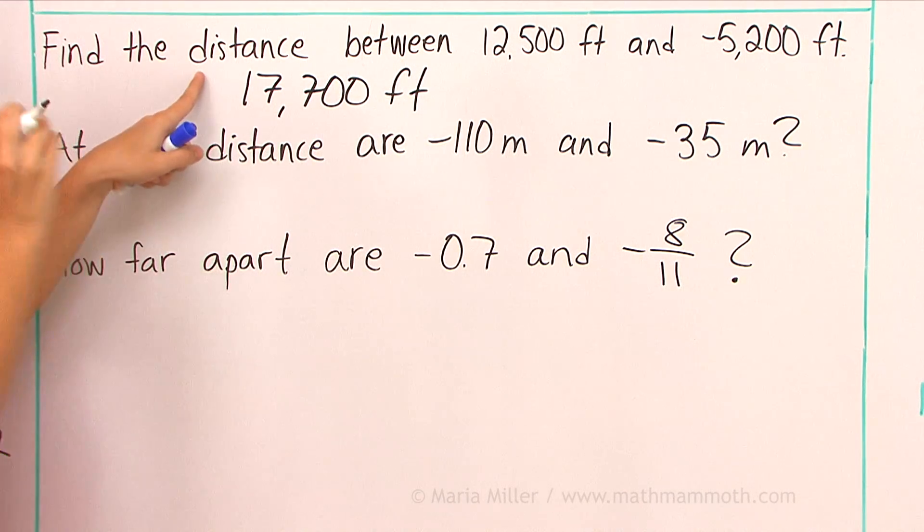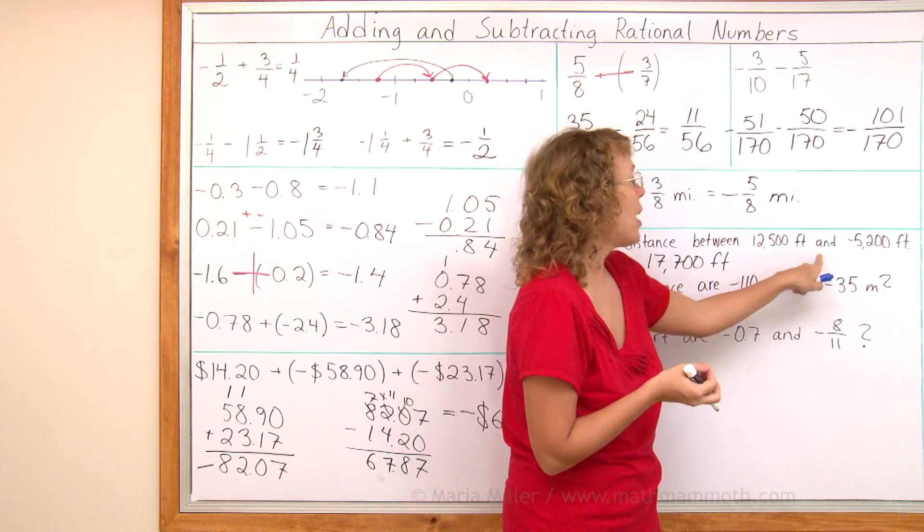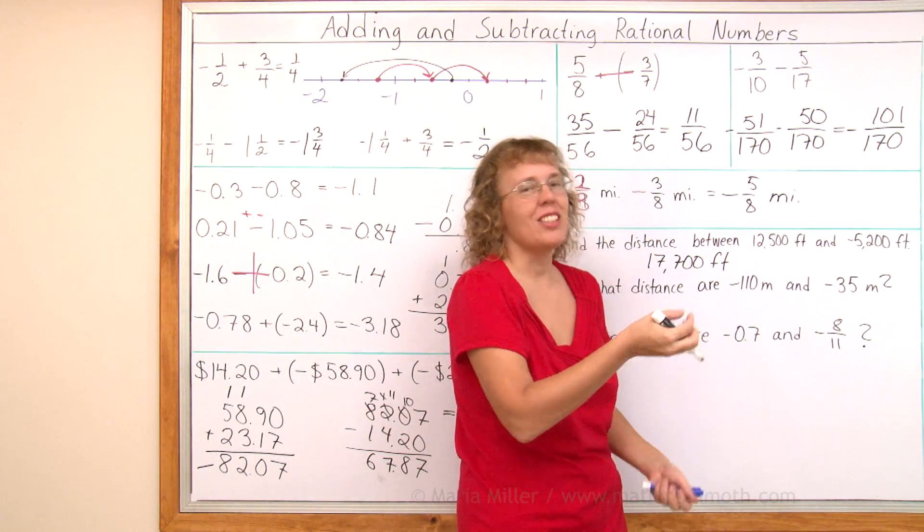Technically speaking, if there's a find the distance problem, you would subtract. But if you take twelve-thousand five-hundred minus negative five-thousand two-hundred, you have this minus minus there. And so then you add.